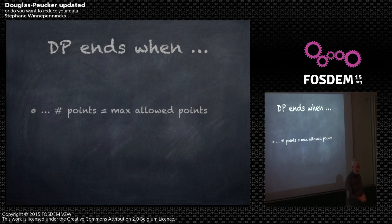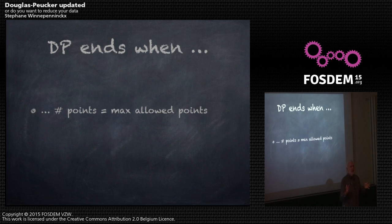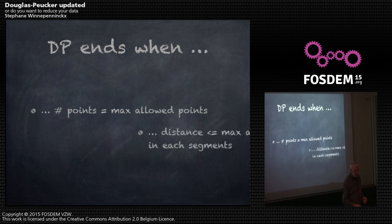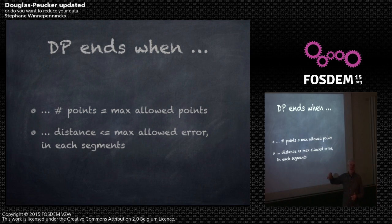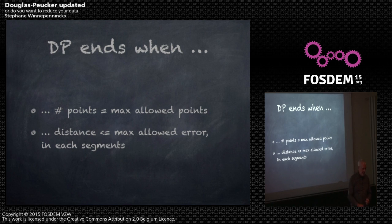There are two criteria for stopping the algorithm. You can give a maximum number of points — say you want only 1,000 points, you reach 1,000 and you just stop. The other criterion is when the distance you measure is less than or equal to the maximum allowed error in each segment. If your line is divided into 1,000 pieces, the criterion must be followed in each piece.